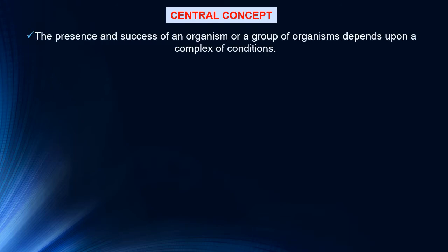The central concept: the presence and success of an organism or a group of organisms depends upon a complex of conditions. Certain materials and conditions are necessary for growth and reproduction. For example, if a farmer plants wheat in a field containing too little nitrogen, it will stop growing when it has used up the available nitrogen, even if other components are present in sufficient quantities. In this case, nitrogen is the limiting factor.